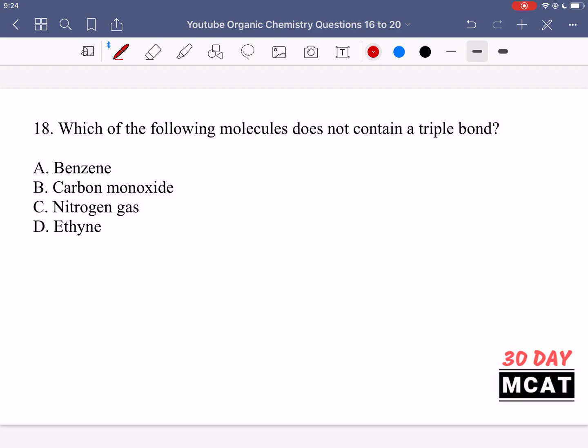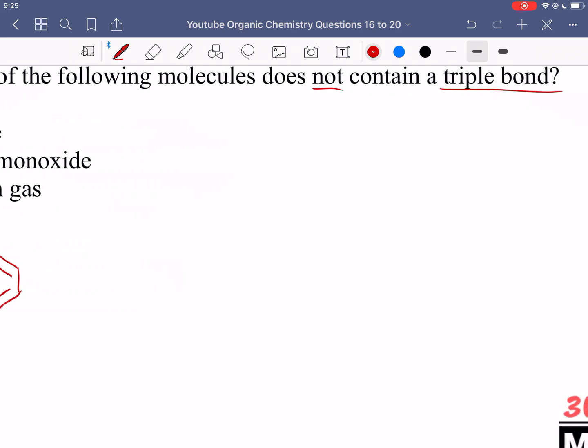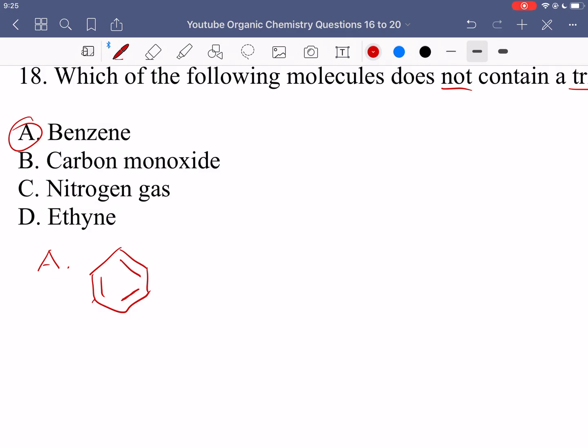In question 18, we're asked which of the following molecules does not contain a triple bond. So for this, we need to look at these names and be able to know what the structure looks like, and then determine whether or not it has a triple bond. So A benzene, it looks like a six carbon ring. But we do have some double bonds in there. But we don't have any triple bonds. Therefore, we can just say that A is the correct answer. If you know the structure for benzene, you know that it does not have triple bonds.